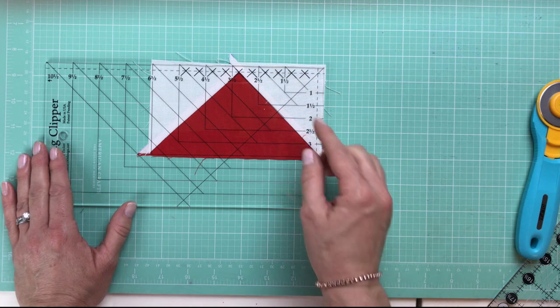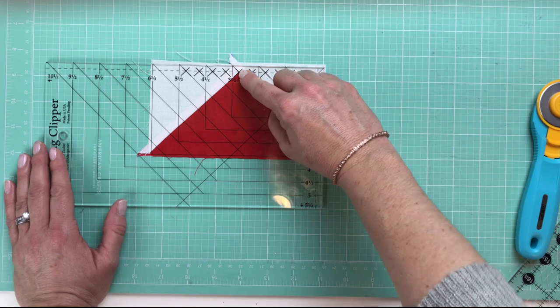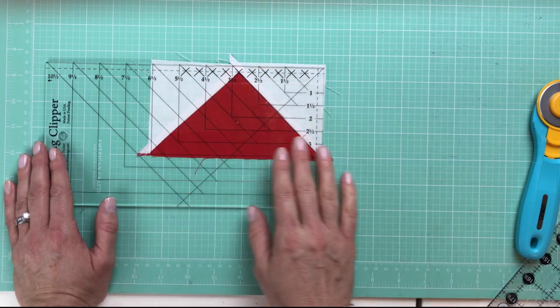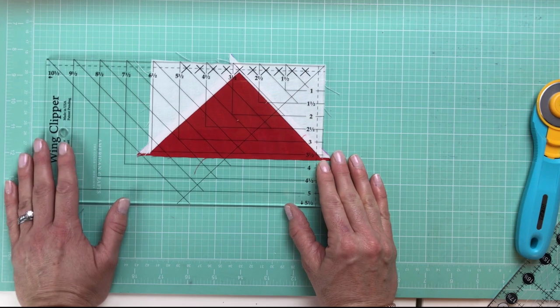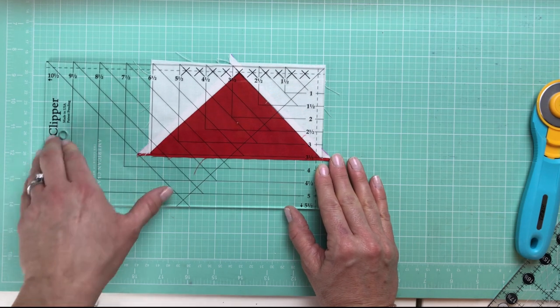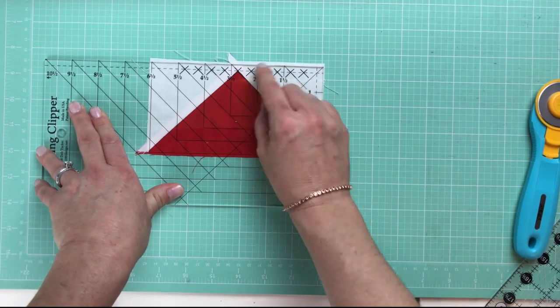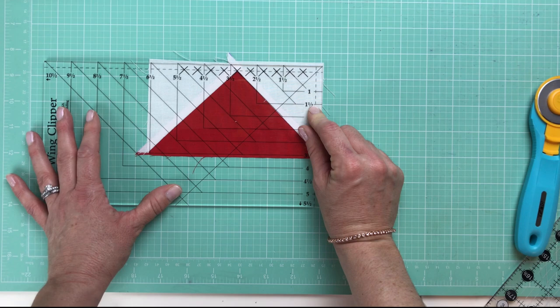That's exactly halfway between 6½ inches, and at the same time, we want to make sure that we have a quarter of an inch above our point of our triangle, and that's how we know what we can trim off.